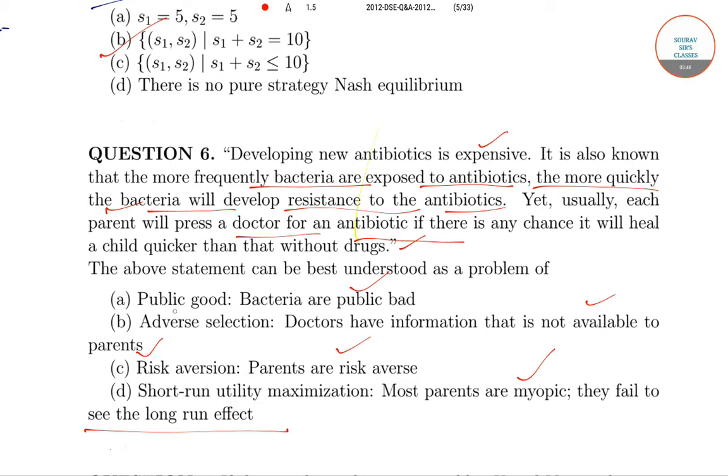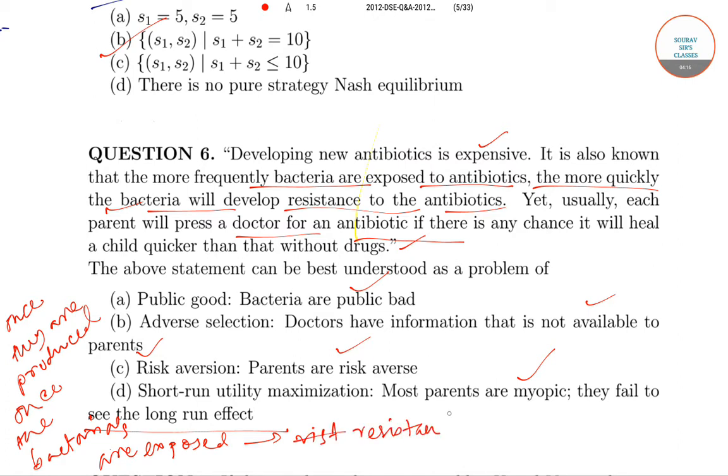So starting with the first option, the bacteria is a public good means once they are produced, once the bacteria are exposed, they create resistance. They create resistance and then the antibiotic becomes obsolete.